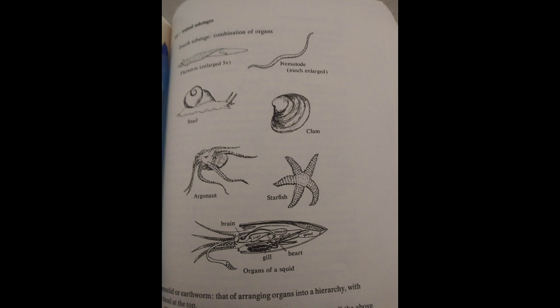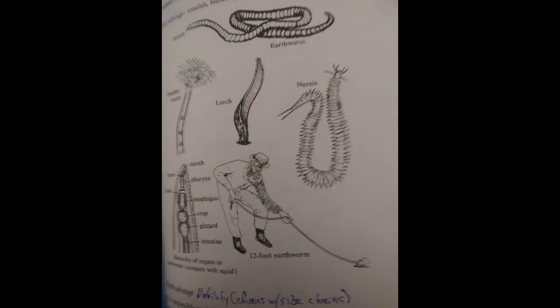His next stage, the fifth substage, are the annelids, representing chains now — polymerization, worms of various sorts. Contrast this with the diagram of the squid: now there's a principle of hierarchical organization of the organs. We have the mouth, the brain, the pharynx, the heart, the esophagus, crop, gizzard, intestine, and anus. So it's all there in a linear arrangement.